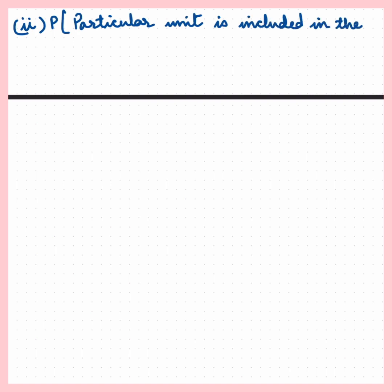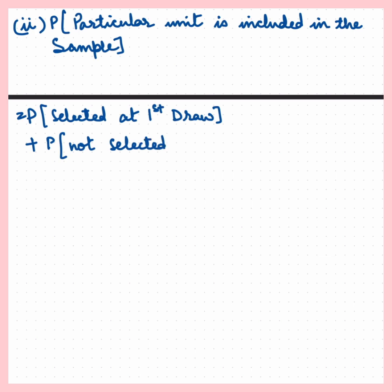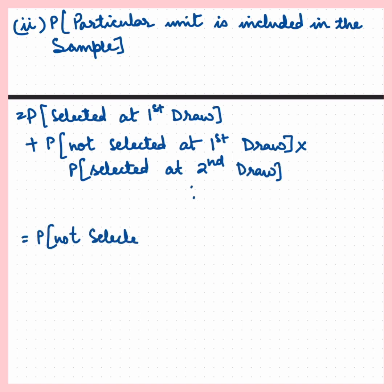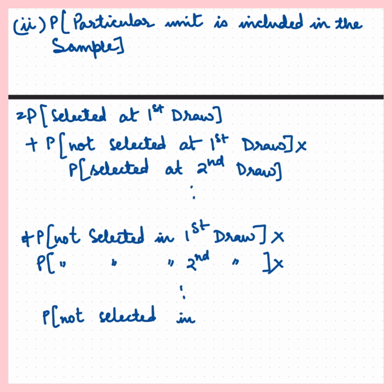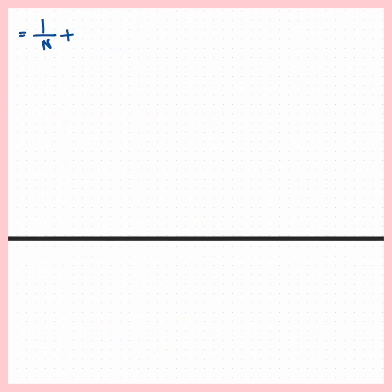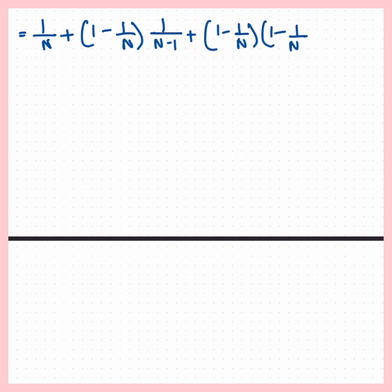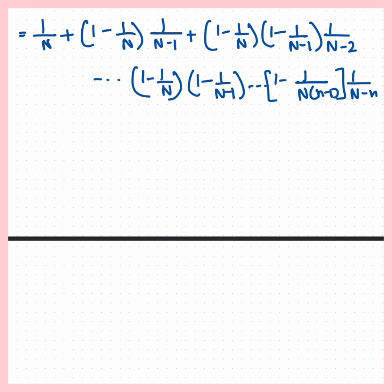The second important concept: the probability that a particular unit is included in the sample is equal to the probability that it is selected in the first draw, or not selected in the first draw but selected in the second draw, and so on. By simplification, we get that the inclusion probability is equal to small n upon capital N.